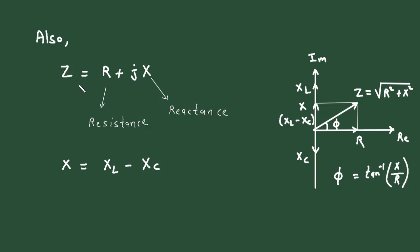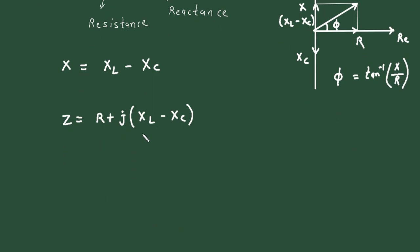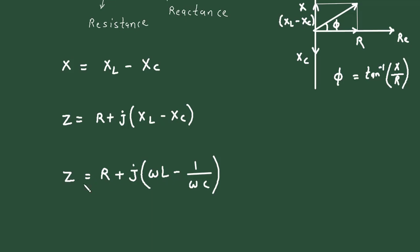So we can rewrite the impedance as Z is equal to R plus J times X. In place of X we can substitute XL minus XC. Again, we can write Z equals R plus J, and in place of XL we substitute Omega L, and in place of XC we substitute 1 upon Omega C. So this is the impedance when there is resistance, inductance, and capacitance.